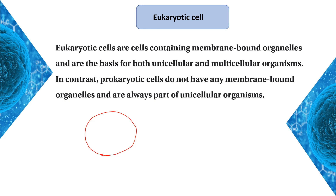The double-layer membrane has two cells within the cytoplasm. In the cytoplasm, we have the largest organelle: the nucleus. The nucleus has a double-layer membrane. This is the chromosome.